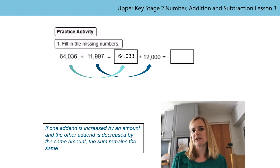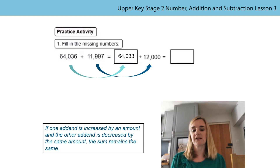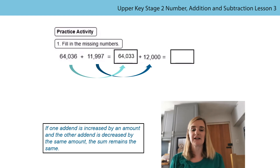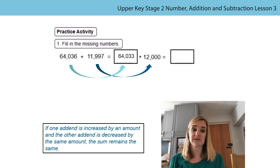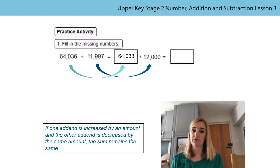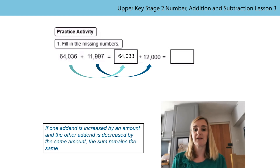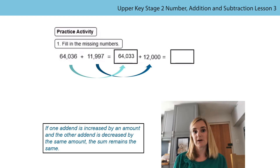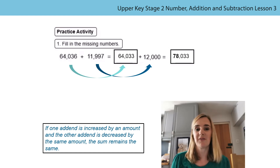I think this is much easier to calculate than the original calculation - 64,033 plus 12,000 is easier to calculate. We only need to pay attention to the thousands and tens of thousands columns using place value. We really just need to look at the 64 in 64,033 and the 12 in 12,000. I know that 64,000 and 12,000 gives me 78,000, but I mustn't forget those 33 - they're very important.